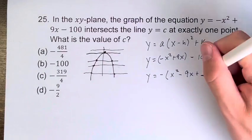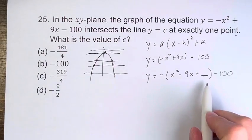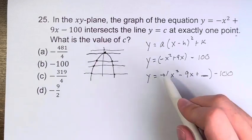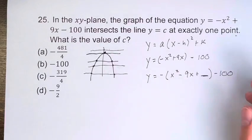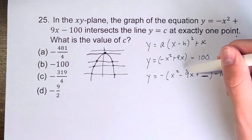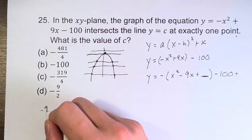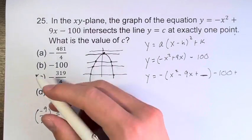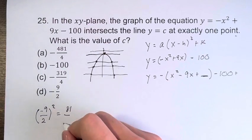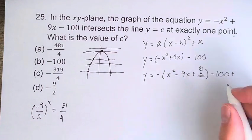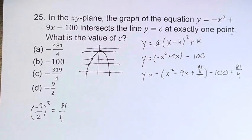Since there's a minus sign out front, when we add the value inside the parentheses we're actually subtracting it from the equation, so we have to add it back at the end. To find this value, take the coefficient of the x term, which is negative 9, divide by 2, and then square it. That gives us negative 9 over 2 squared, which is 81 over 4. So we add 81 over 4 inside, and also add 81 over 4 outside.